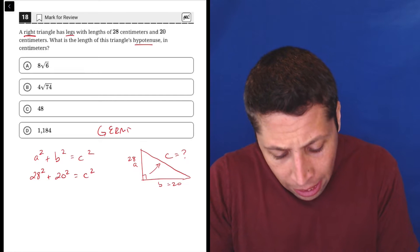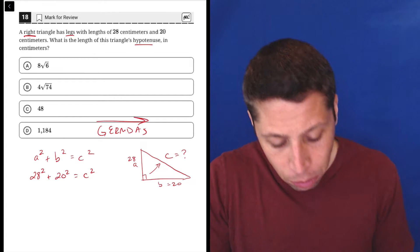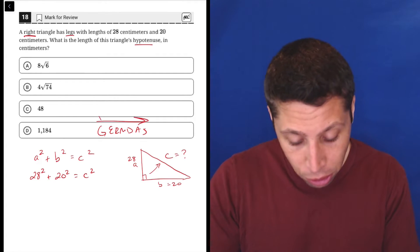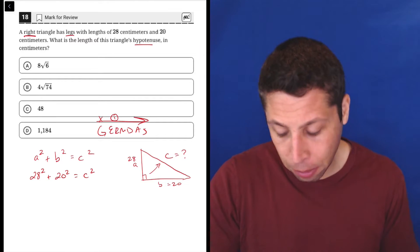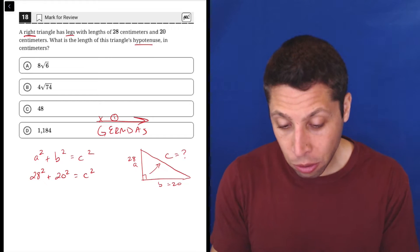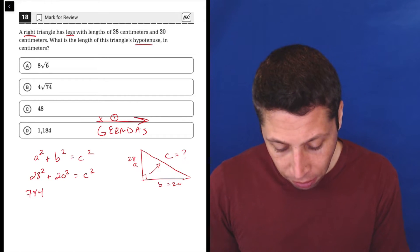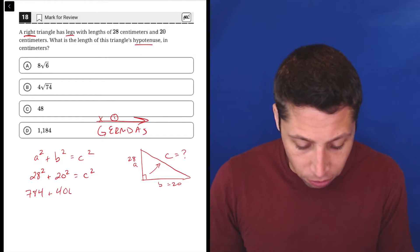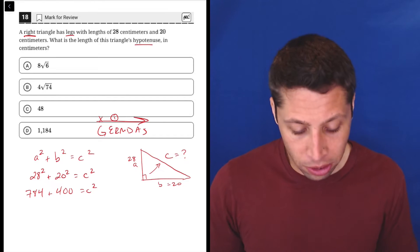Let's do a little GERMDAS here. And when we do it first, we're going to do arithmetic. So we're going to go through it forward. So there's no groups, but there is some exponents and radicals. So that's step one here is let's simplify that. So 28 squared, I would just do this in my calculator is 784. 20 squared is 400, and that's equal to C squared.